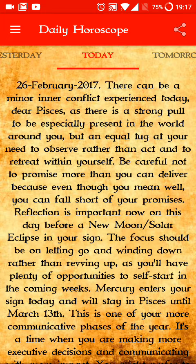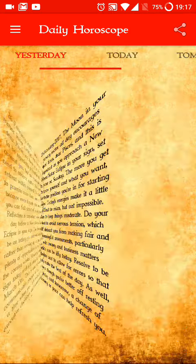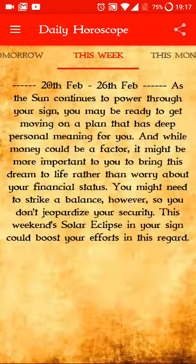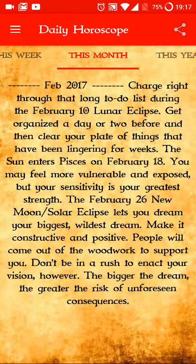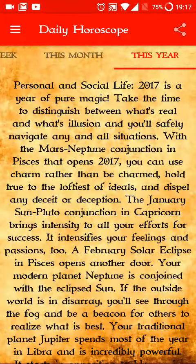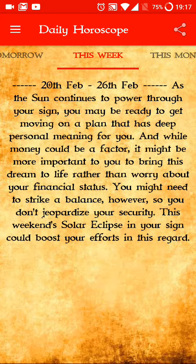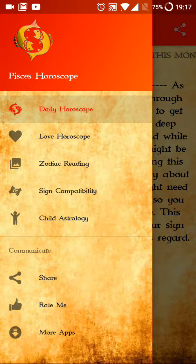By default, it will take you to the daily horoscope, where you have today's horoscope. If you slide left and right you can change it to tomorrow, weekly, monthly, and yearly horoscope — this is the 2017 yearly horoscope. On the top left corner there is a button which you can click to expand the other remaining features of the app.